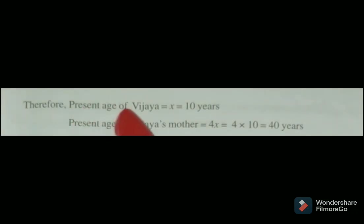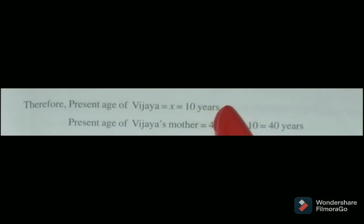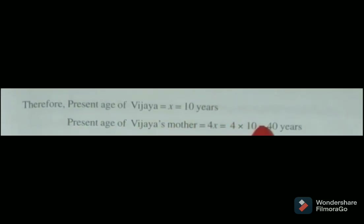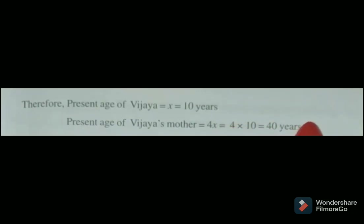Therefore the present age of Vizya is X equals 10 years, and the present age of Vizya's mother is 4X equals 4 into 10, which is 40 years.